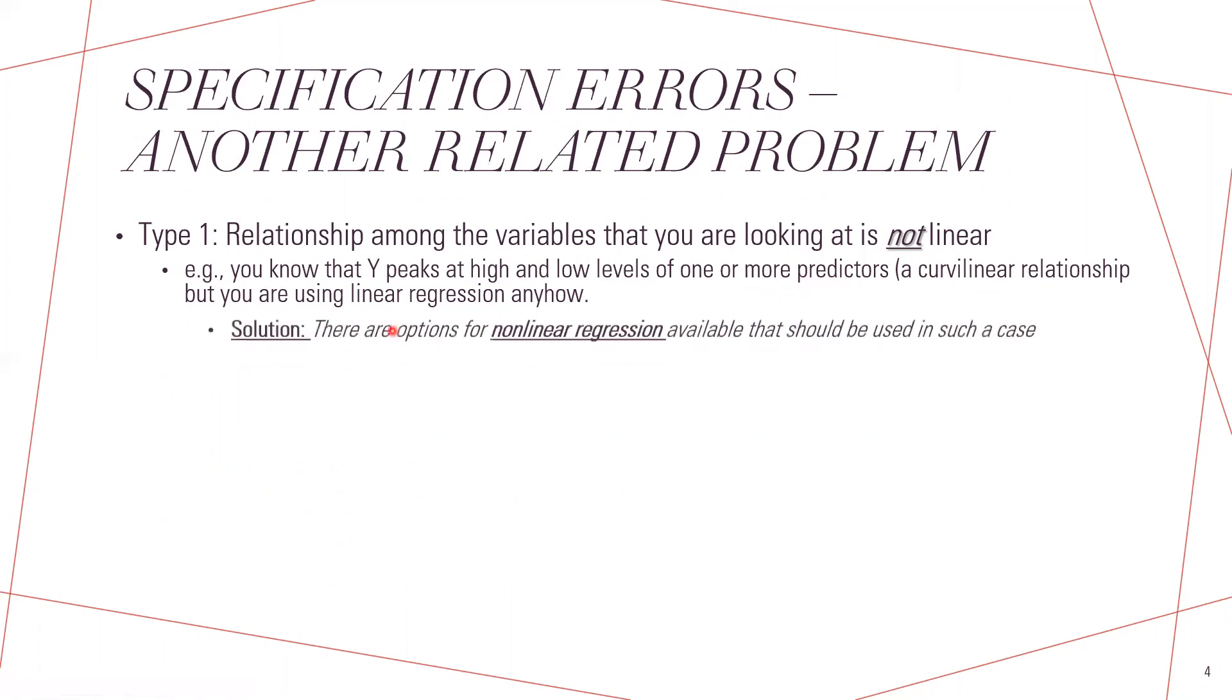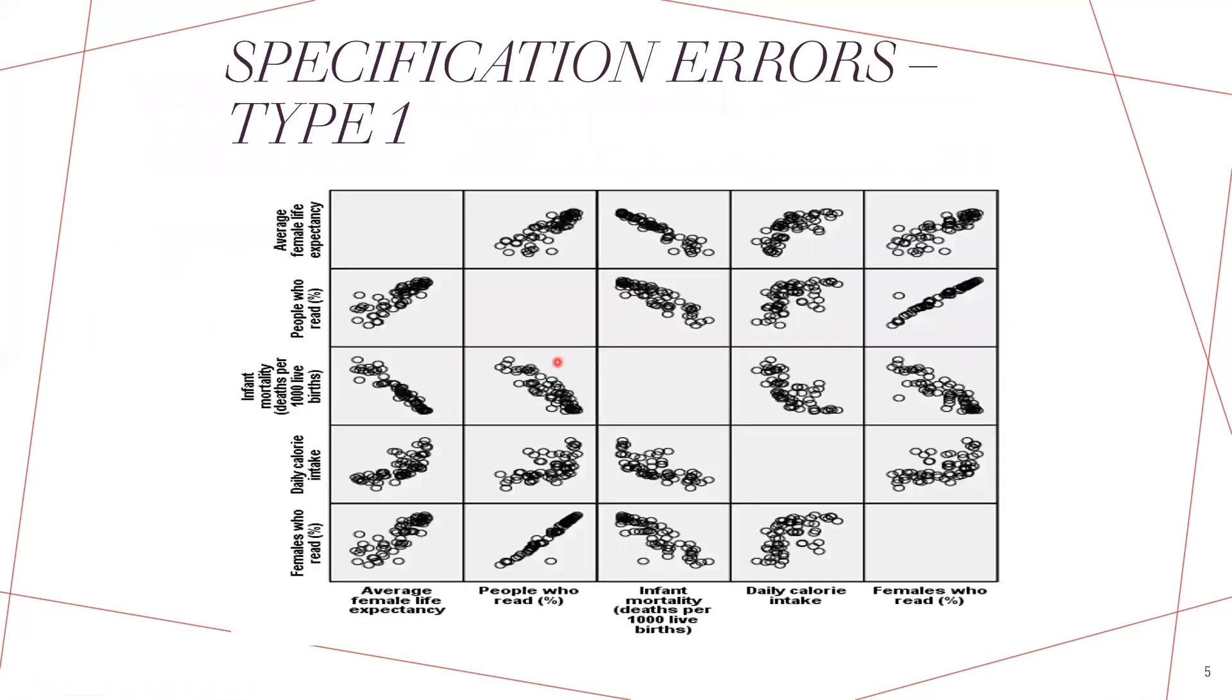So the solution is that we can obtain nonlinear regression, which we are not covering in this video. But how it looks like, for example, if you can see in our World 95 data, we have different variables. If the scatter plot is showing the linear pattern either in decreasing order or in increasing order, then it is fine to run the linear regression with that.